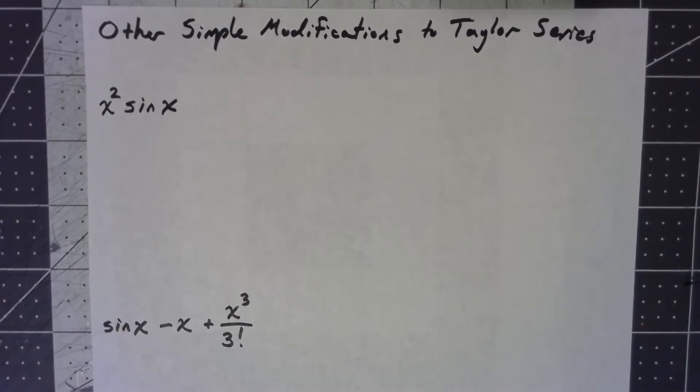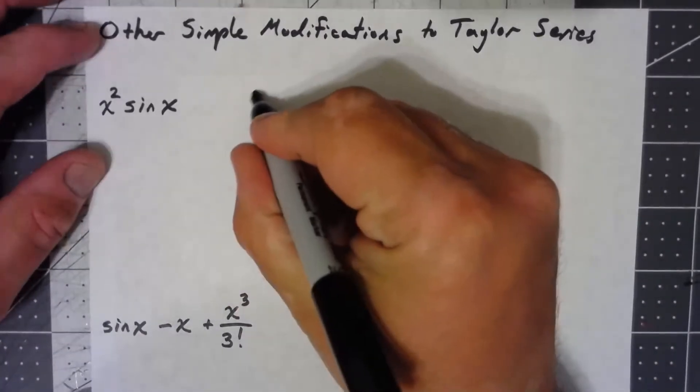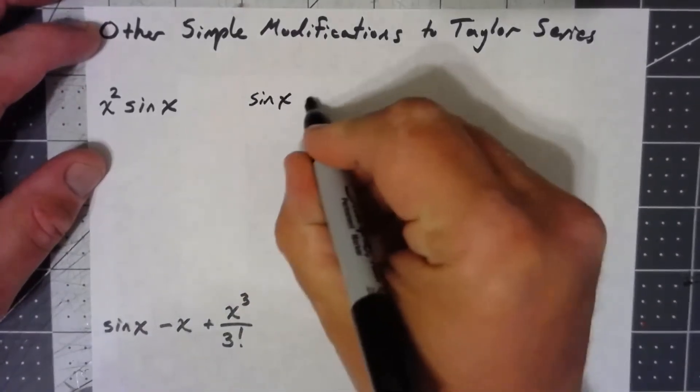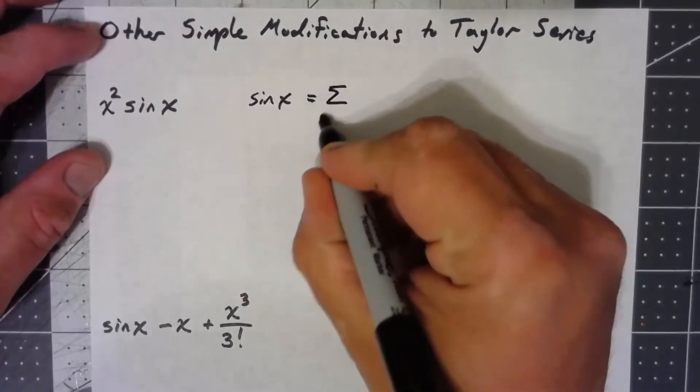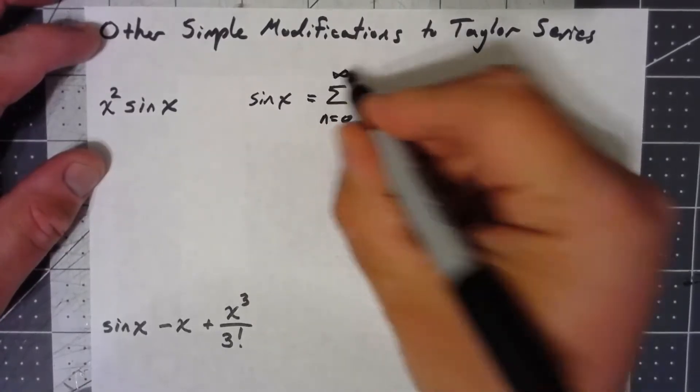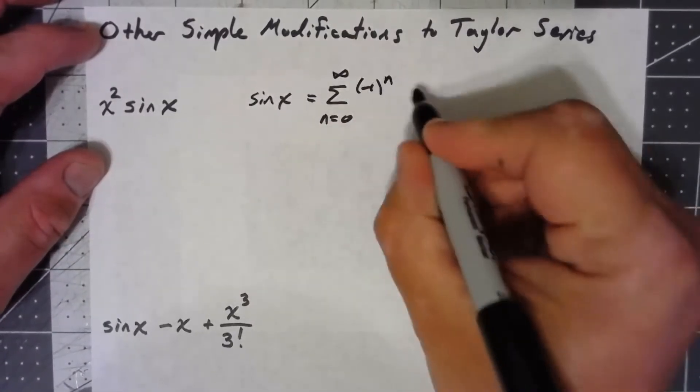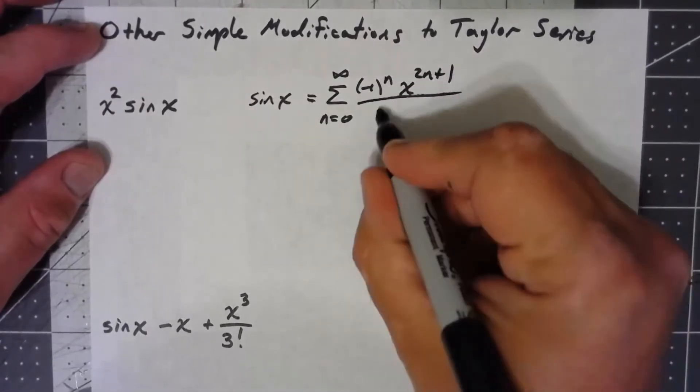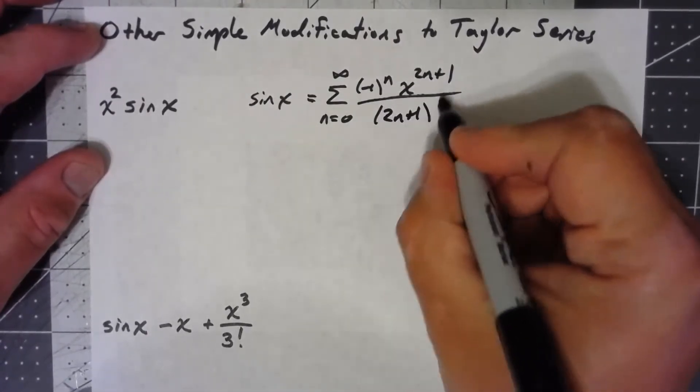The thing is, I'm still going to start with my power series for sine of x, so sine of x is the sum from n equals 0 to infinity, negative 1 to the n, x to the 2n plus 1, over 2n plus 1 factorial.